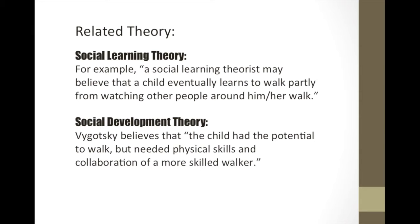Related theory: Social learning theory. For example, a social learning theorist may believe that a child eventually learns to walk partly from watching other people around him or her walk. In contrast, social development theory holds that Vygotsky believed the child had the potential to walk, but needed physical skills and the collaboration of a more skilled walker.